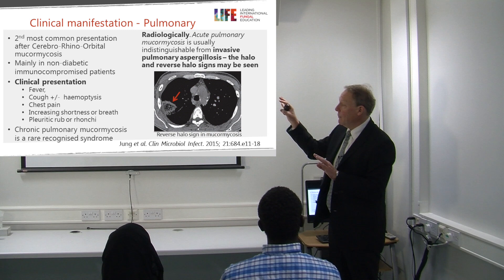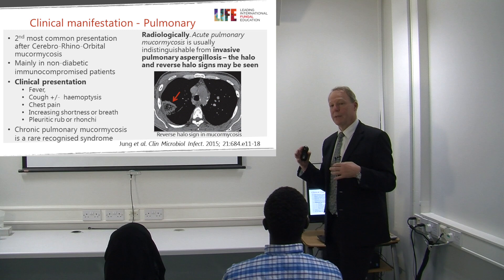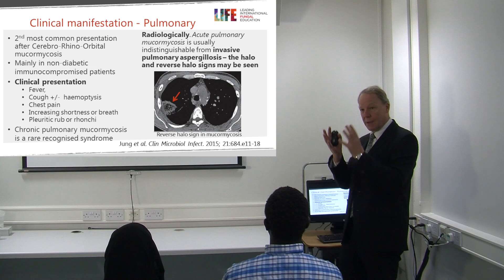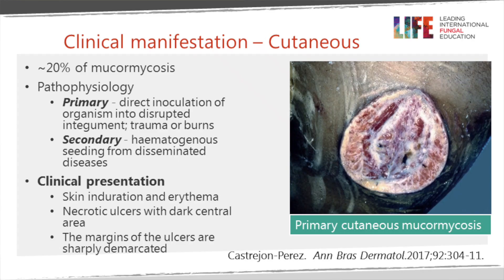Chronic pulmonary mucormycosis has recently been recognised as an effectively new syndrome. It's quite difficult to diagnose because cultures are often negative from respiratory samples, but if you do grow the organism and have a chronic cavitary infiltrate, that may be the diagnosis.